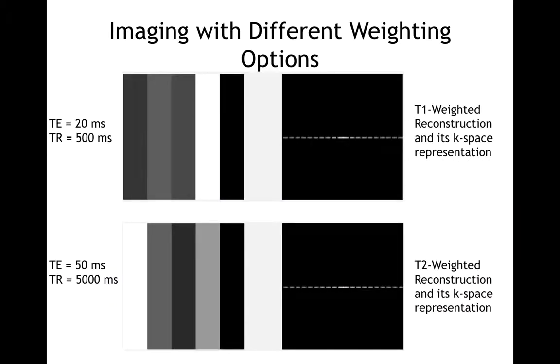I started by making a T1 weighted reconstruction. To eliminate the effect of T2 relaxation, I set the echo time to a very low value, 20 milliseconds. To give the emphasis on T1 relaxation, I set the repetition time, TR, to a comparable value to the T1 constants of the tissues, 500 milliseconds.